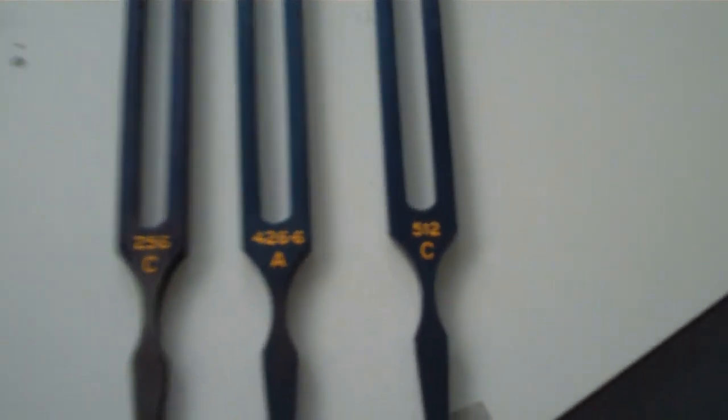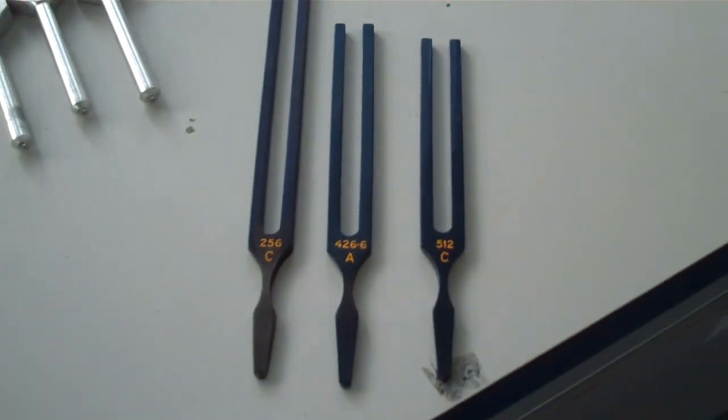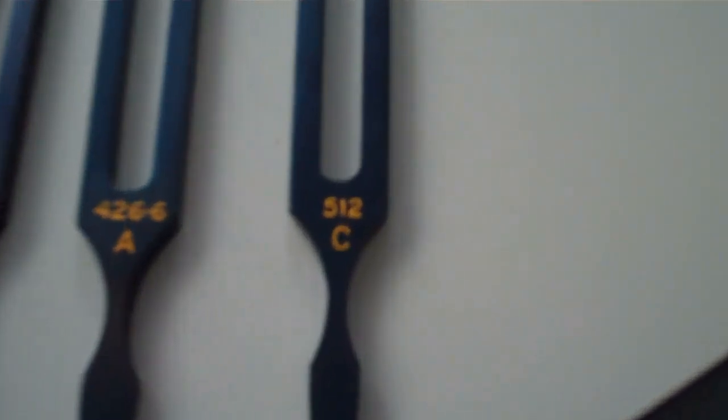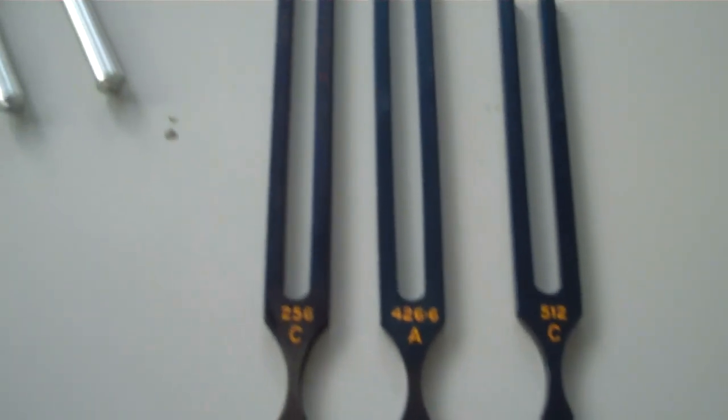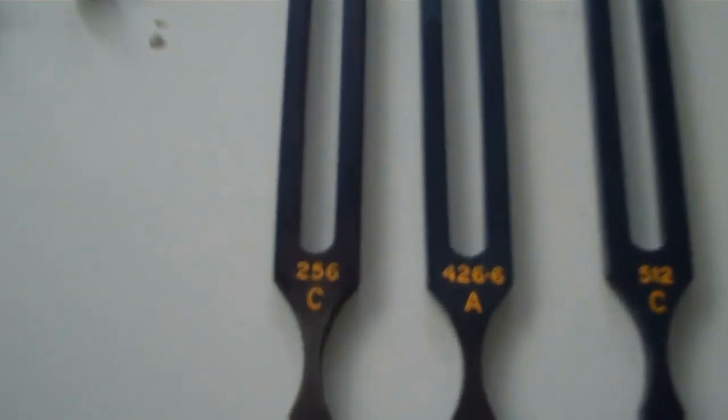If you have a look at the tuning forks, you will see that the smaller tuning fork on the right has a higher frequency, 512, a higher pitch than the longer tuning fork, which has a frequency of 256.